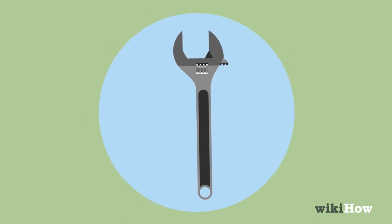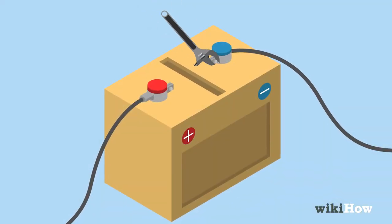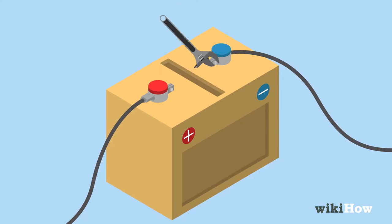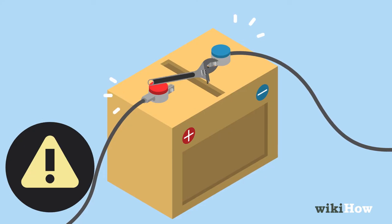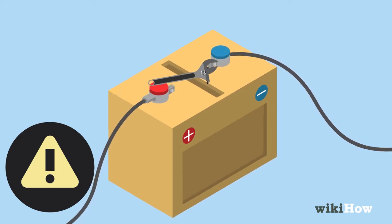Next, use a wrench to unbolt the negative battery cable. Be careful not to touch the negative and positive terminals at the same time with the wrench, or you could create a spark.